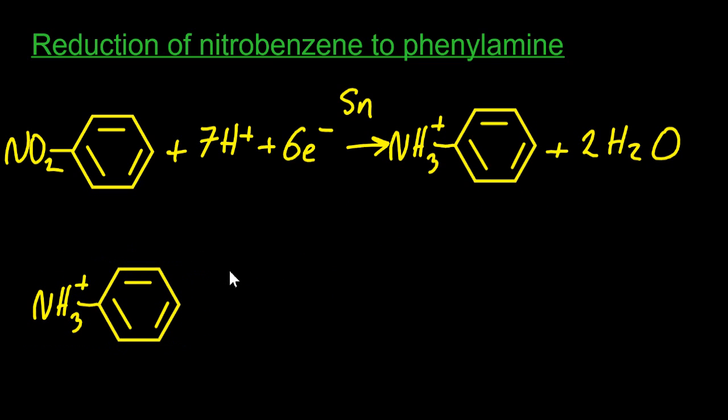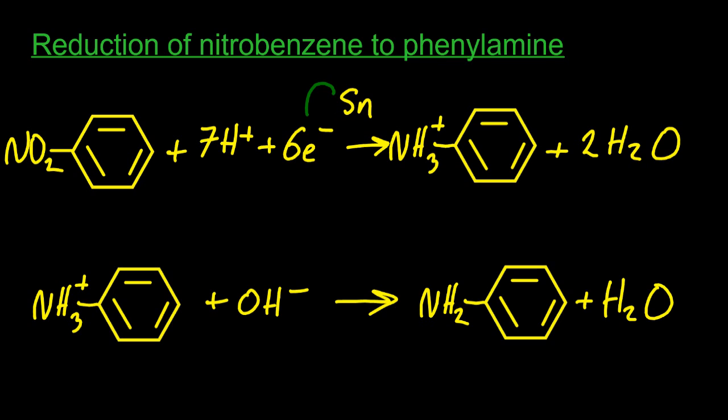The second step is where you take that product, add hydroxide ions, probably sodium hydroxide. That rips off the H plus from that ammonium part of the molecule. And so now that H plus is gone, the NH3 plus turns to NH2. And some water. All right, let's label some stuff. So the tin provides the electrons. Of course it does. You have to reflux the top reaction. This is called the phenyl ammonium ion and you've just made phenyl amine.